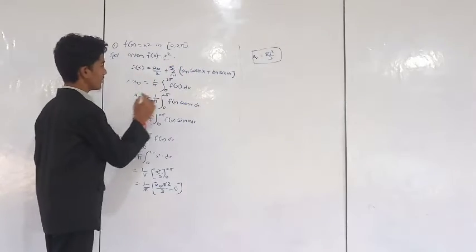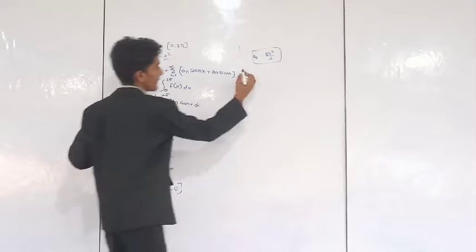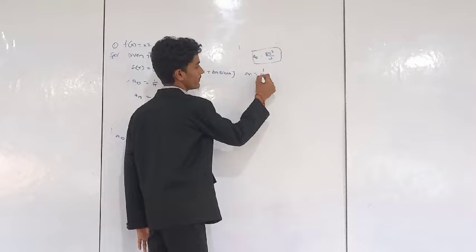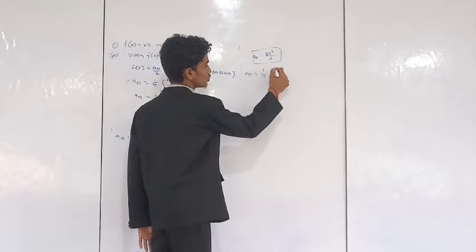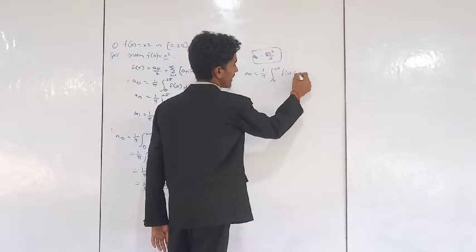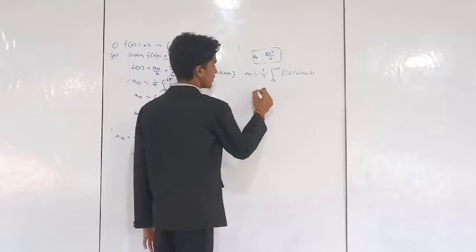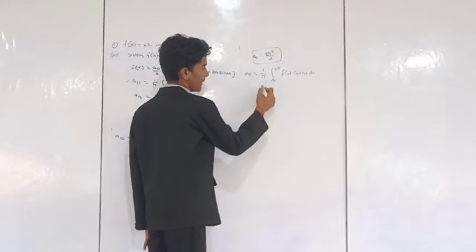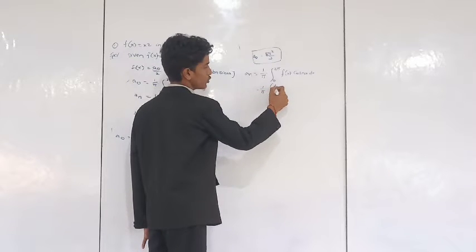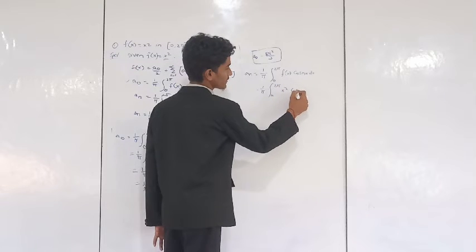This is completed. Now we calculate Aₙ. Aₙ equals 1 by π, integral from 0 to 2π of f(x) cos(nx) dx. Substituting f(x) = x², we get 1 by π, integral from 0 to 2π of x² cos(nx) dx. We apply the UV integration by parts formula.